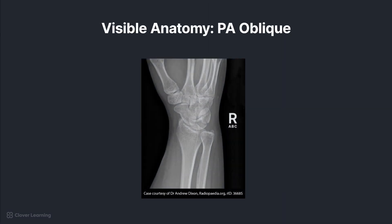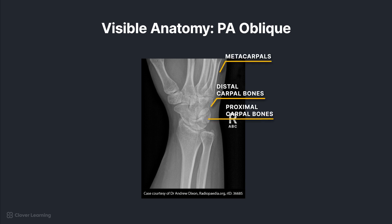Working from the most distal to the most proximal anatomy, we can still identify the proximal metacarpals, distal and proximal rows of carpal bones, as well as the distal radius and ulna. Note the slight superimposition on the medial aspect of the hand and wrist because of the external rotation.